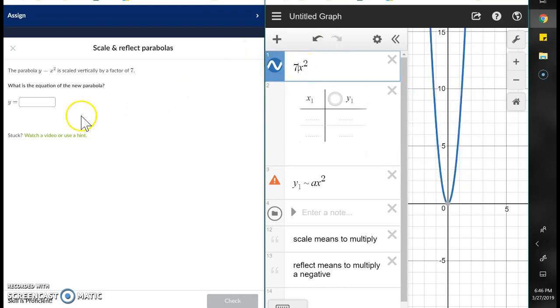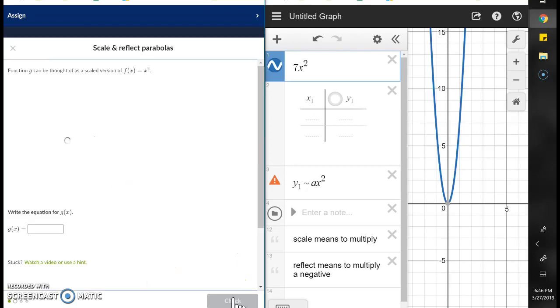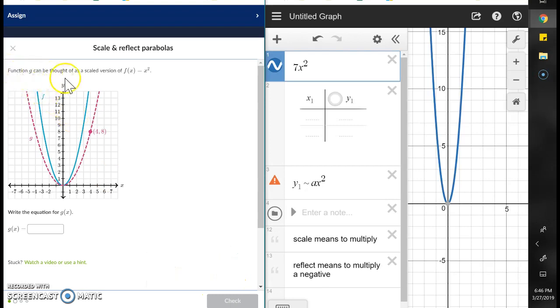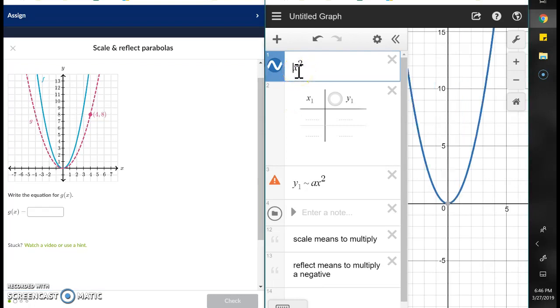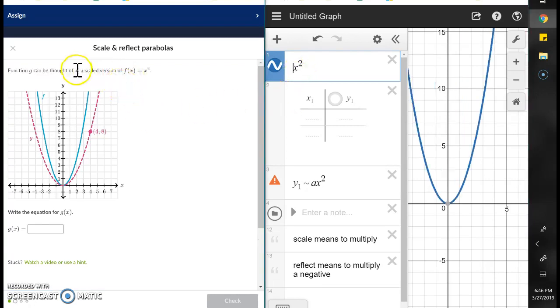Scale means multiply, so we've got 7x squared here. We're trying to take this base function and scale it, multiply by something that causes it to go through this particular coordinate point.